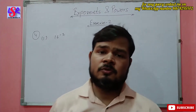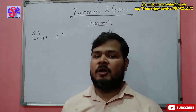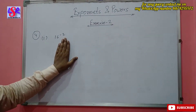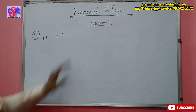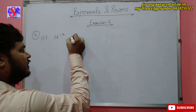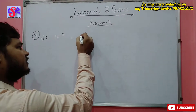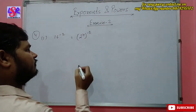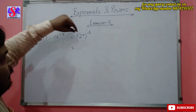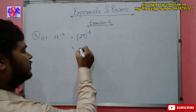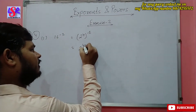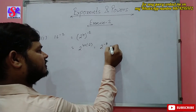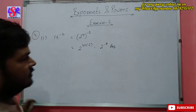Now we move to question 4, in which we have to express the given expression with a specified base. The first part is 16 to the power minus 2, with a base of 2. We know 16 can be written as 2 to the power 4, and power on a power is multiplied, so this gives 2 to the power 4 into minus 2, that is 2 to the power minus 8 as the answer.